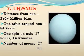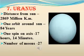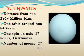Uranus is the seventh planet from the Sun. Its distance from the Sun is 2,869 million km. One orbit around the Sun takes 84 years. One spin on axis takes 17 hours and 14 minutes. It has 27 moons.